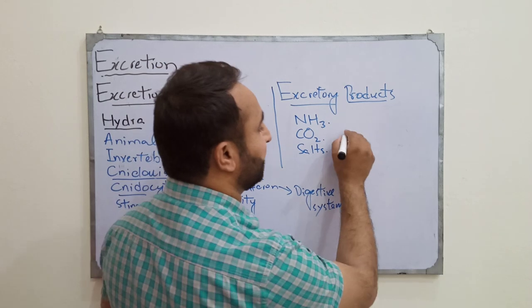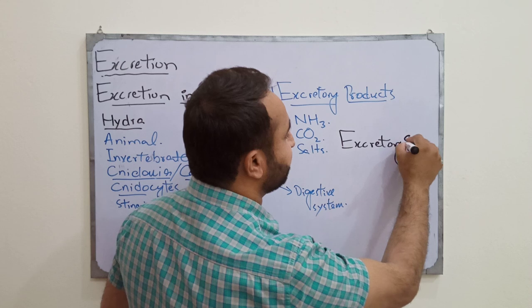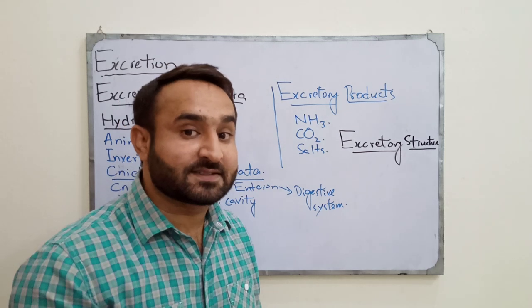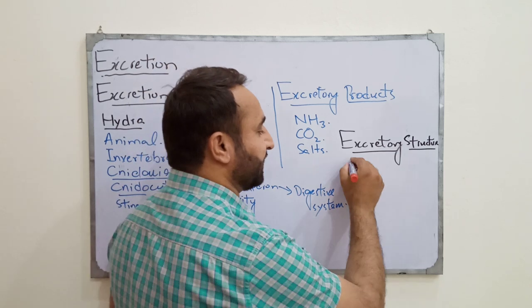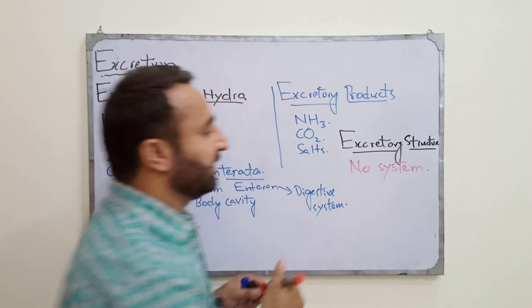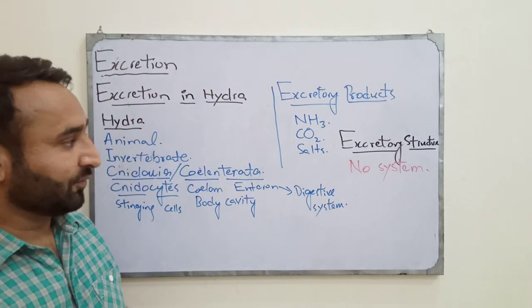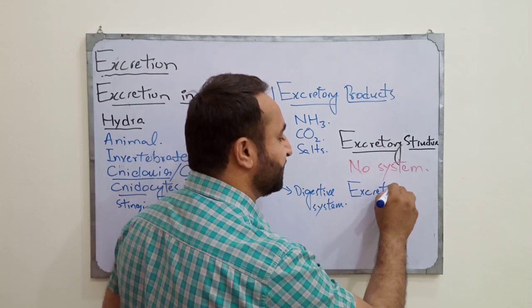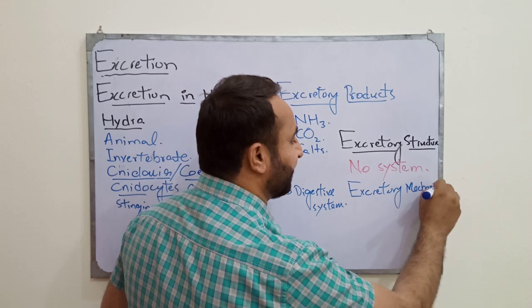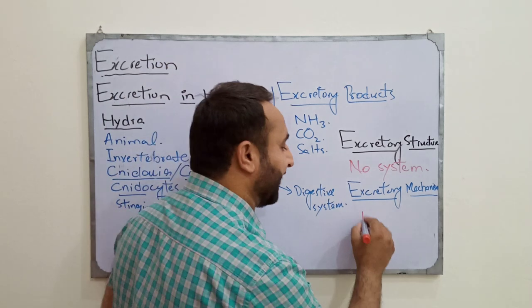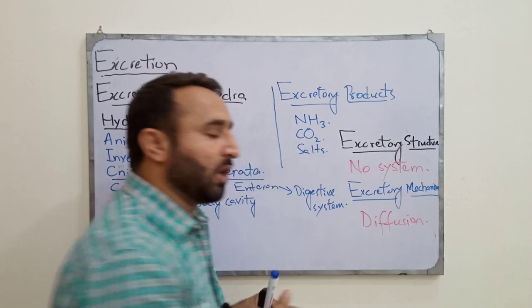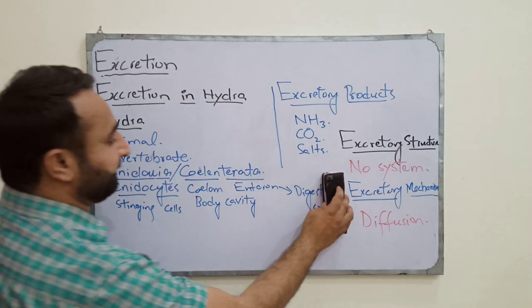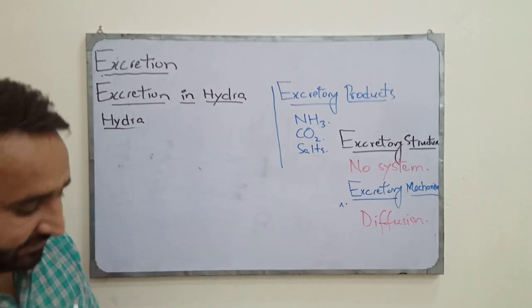Next, we focus on the excretory structures in hydra. A very important point: there is no dedicated excretory system in hydra for elimination of nitrogenous waste. So how does excretion take place? The excretory mechanism of hydra is a very simple process called diffusion — the movement of molecules from high concentration to low concentration.